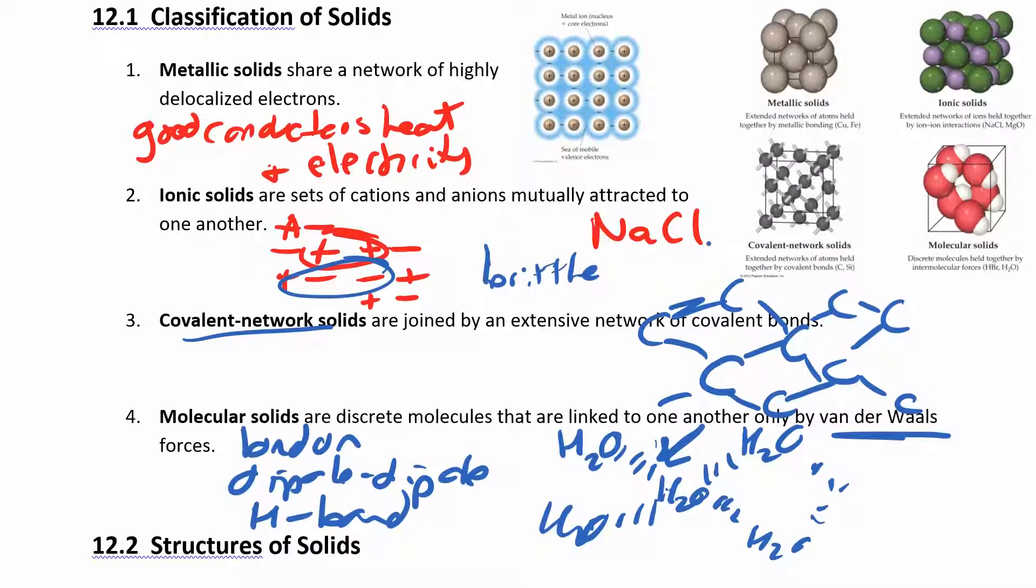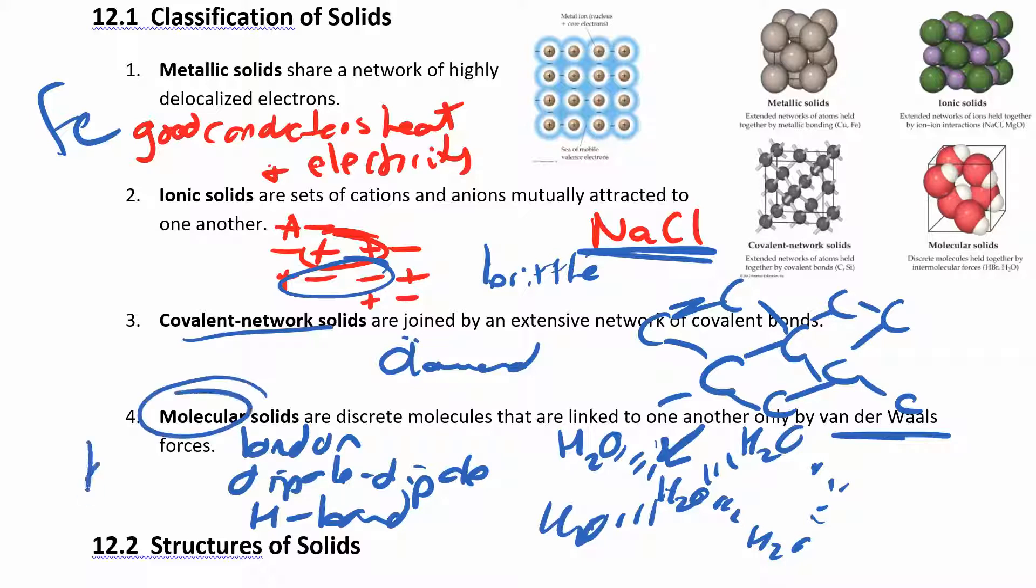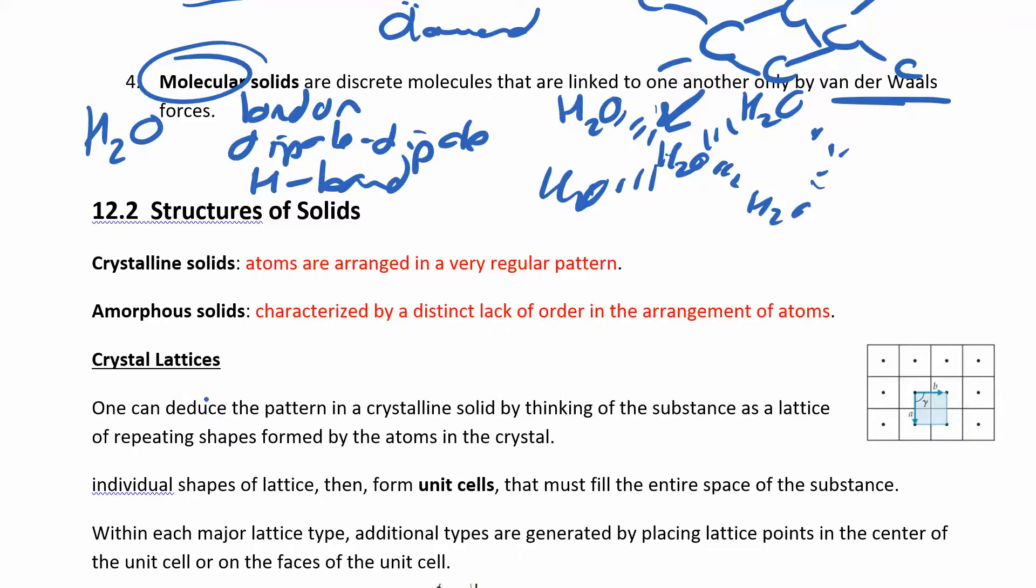So if I gave you a solid, you should be able to classify it. So I've just said, what kind of solid would iron form? Well, it would form a metallic solid because it's a metal. What about sodium chloride? Well, that's an ionic compound. So that would form an ionic solid. How about diamond? Diamonds form covalent network solids. And then any other molecules like water would form a molecular solid. So you should be able to classify those basic four classifications of solids.